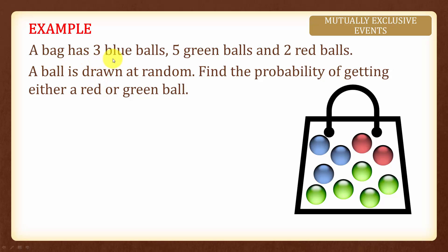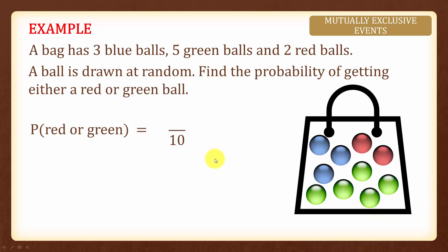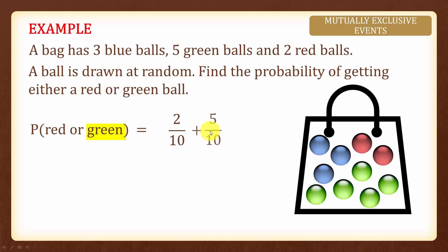In this example, a bag has 3 blue balls, 5 green balls and 2 red balls. A ball is drawn at random. We are asked to find the probability of getting either a red or a green ball. In total there are 10 balls, of which 2 are red and 5 are green, so 7 of them are either red or green. The probability of getting a red or green ball is 7 over 10, or equivalently 2 over 10 plus 5 over 10, which also gives 7 over 10.